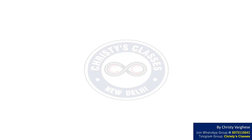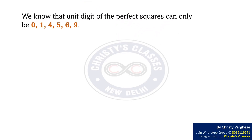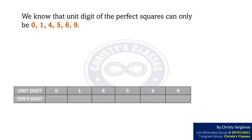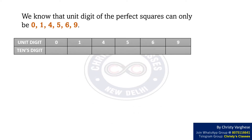We know that the unit digit of perfect squares can only be 0, 1, 4, 5, 6, and 9. Now, we are going to find the tenth digit when the unit digits are 0, 1, 4, 5, 6, and 9.